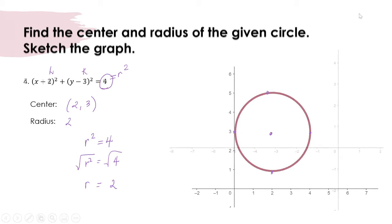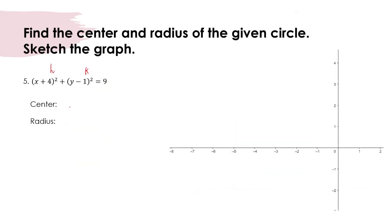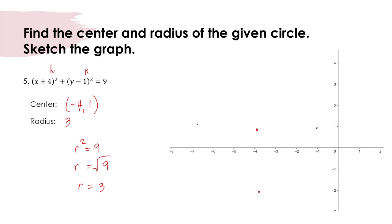In another example, h is negative 4 and k is 1, so the center is at (negative 4, 1). Since r squared equals 9, taking the square root gives r equals 3. Sketching the graph, the center is in the second quadrant. Identifying points three units away from the center gives (negative 1, 1), (negative 4, negative 3), (negative 7, 1), and (negative 4, 4). Sketching through these points gives the circle.